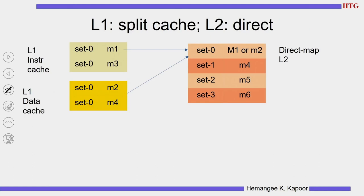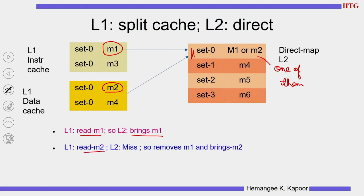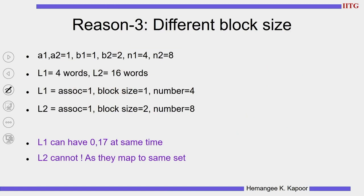L1 instruction cache and data cache each have two blocks and can independently house M1 and M2. But because both map to the same set in L2, only one can be stored there — so inclusion is violated. Suppose L1 reads M1, then L2 brings M1. Then L1 reads M2 from the data cache — L2 misses and removes M1 to bring M2. Now M1 is still in the L1 instruction cache but no longer in L2, violating inclusion. So when I have a split cache, I have a problem.